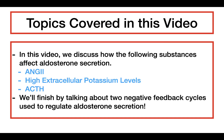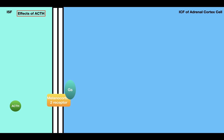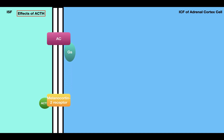The final substance we'll look at is ACTH, or adrenocorticotropic hormone. In order for ACTH to have its effects, it binds to the melanocortin-2 receptor. The melanocortin-2 receptor is a G-protein-coupled receptor coupled to a GS protein. When ACTH binds, the GS protein is activated, which activates adenylate cyclase. Adenylate cyclase catalyzes the conversion of ATP into cyclic AMP, which then activates protein kinase A.